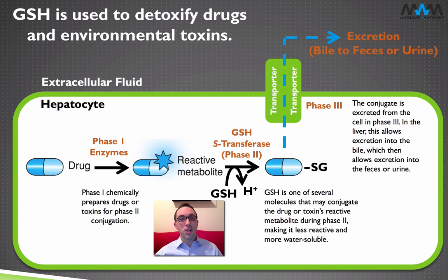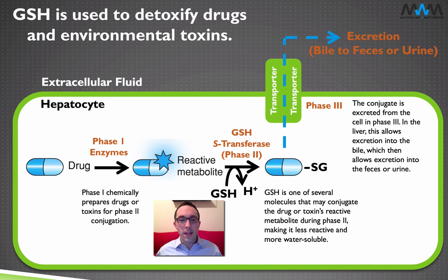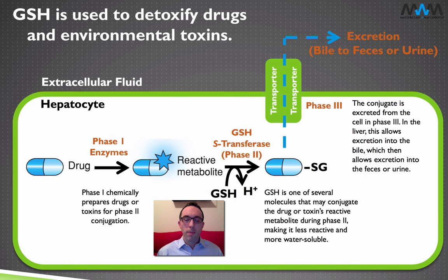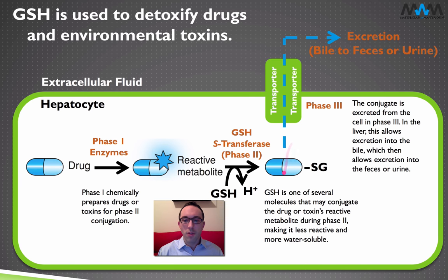That reactive metabolite is actually more dangerous than the original drug; however, it lays down the framework where it prepares the molecule to be conjugated in phase two. The second phase is conjugation, and there are other molecules besides glutathione that engage in conjugation — glutathione is just one. But when it does so, the enzyme glutathione S-transferase takes the reactive metabolite and adds glutathione — that's called conjugation — and we have drug-SG. This SG literally demonstrates that the sulfur is binding to the drug and the whole rest of the glutathione molecule is behind the sulfur.